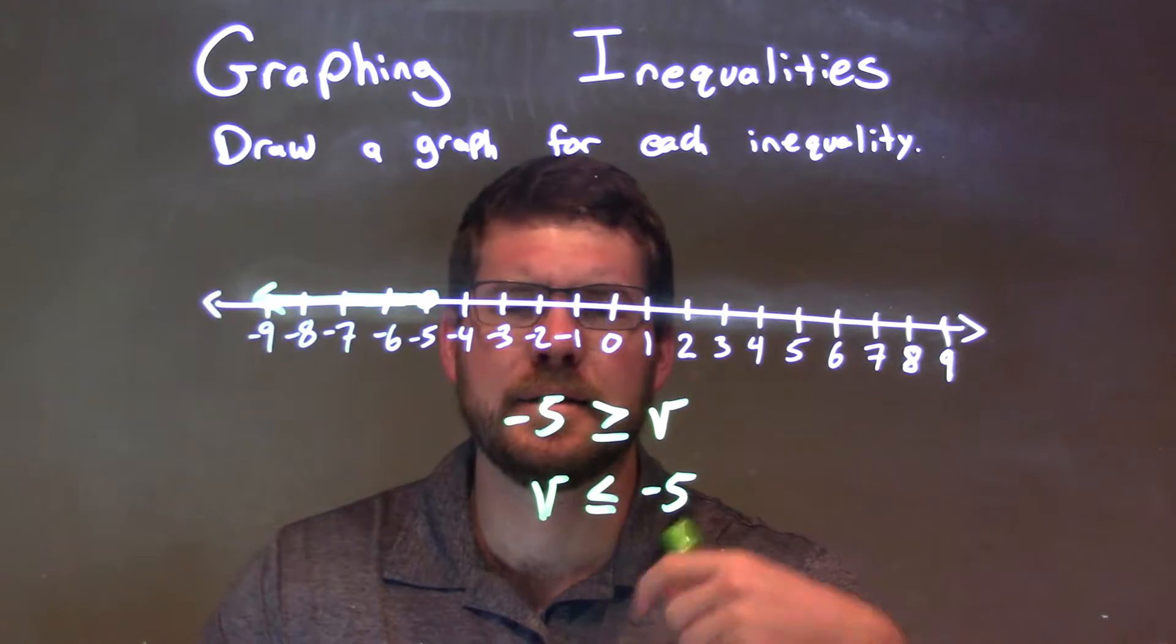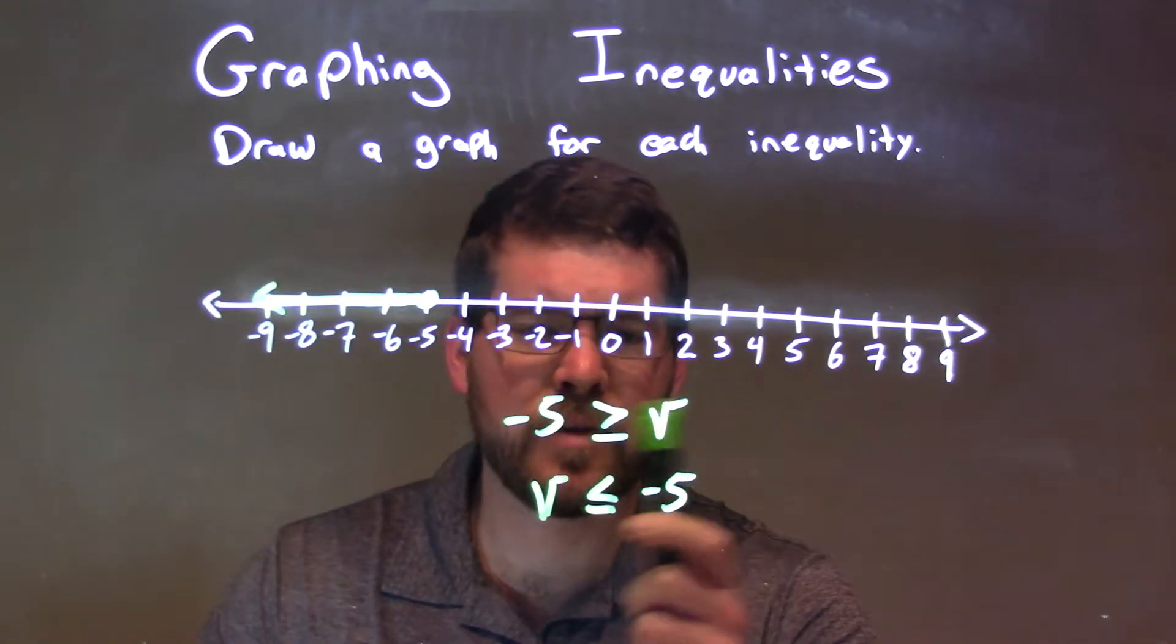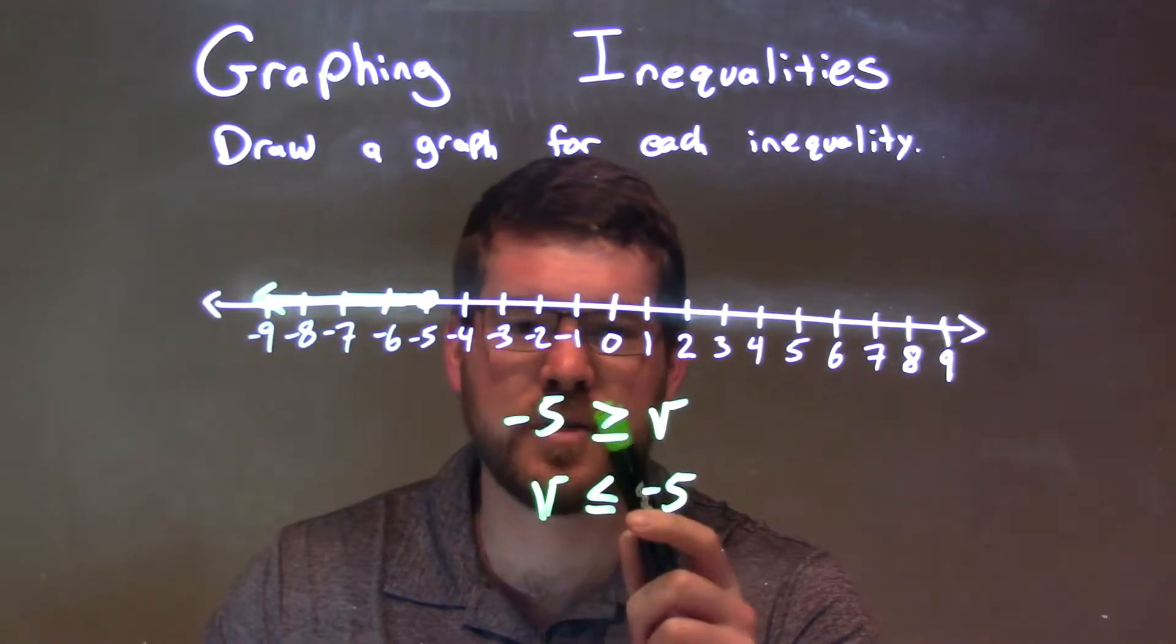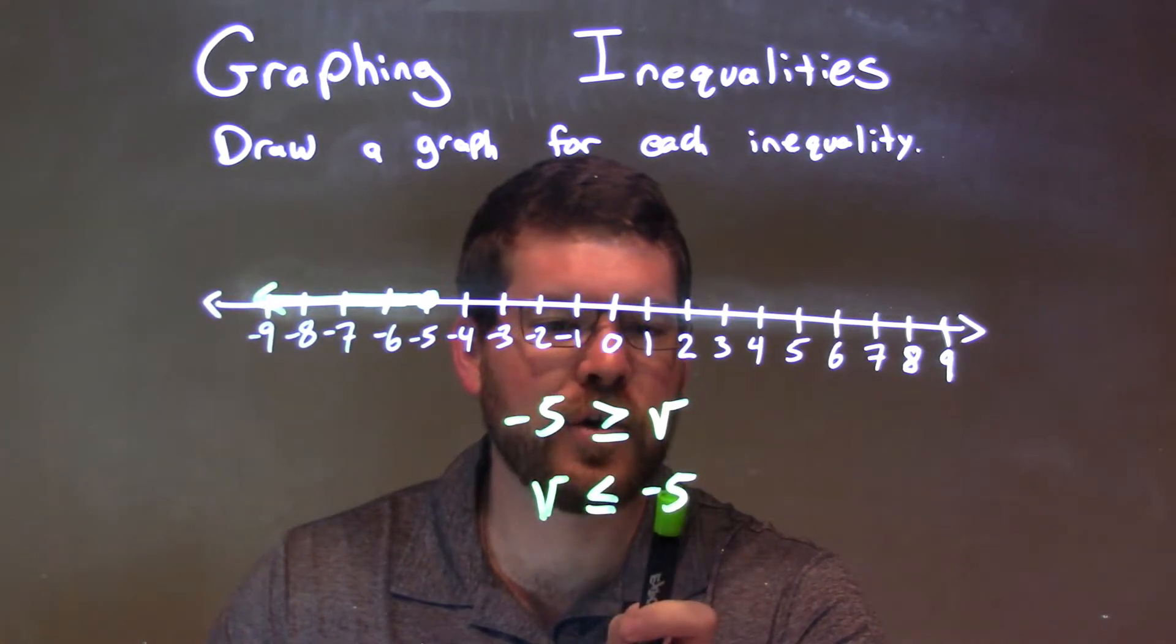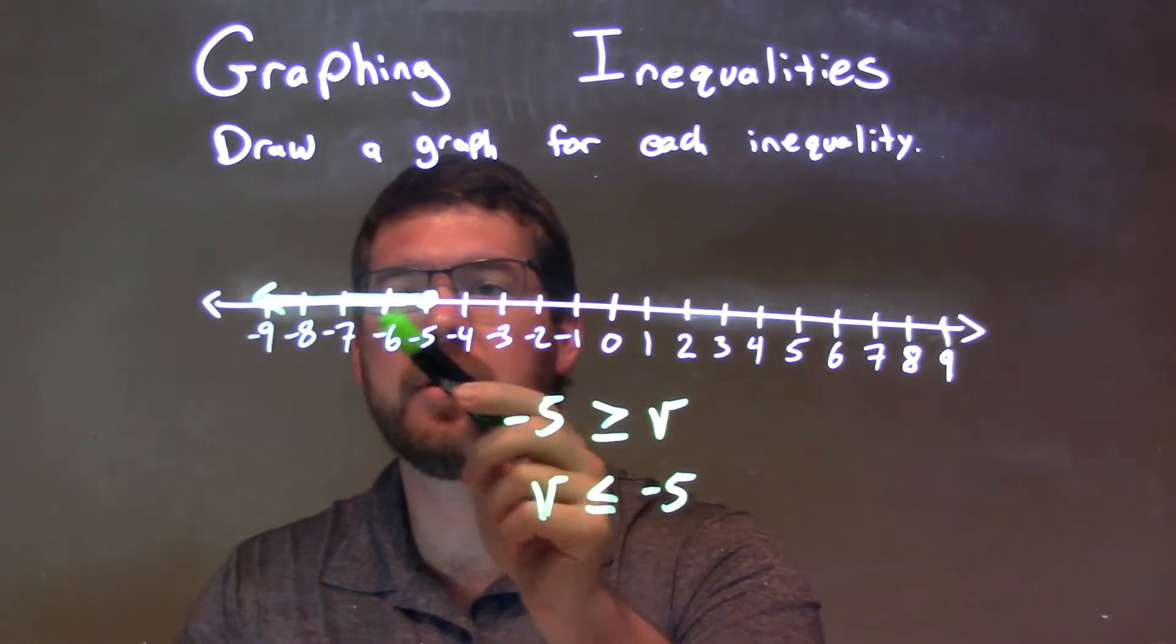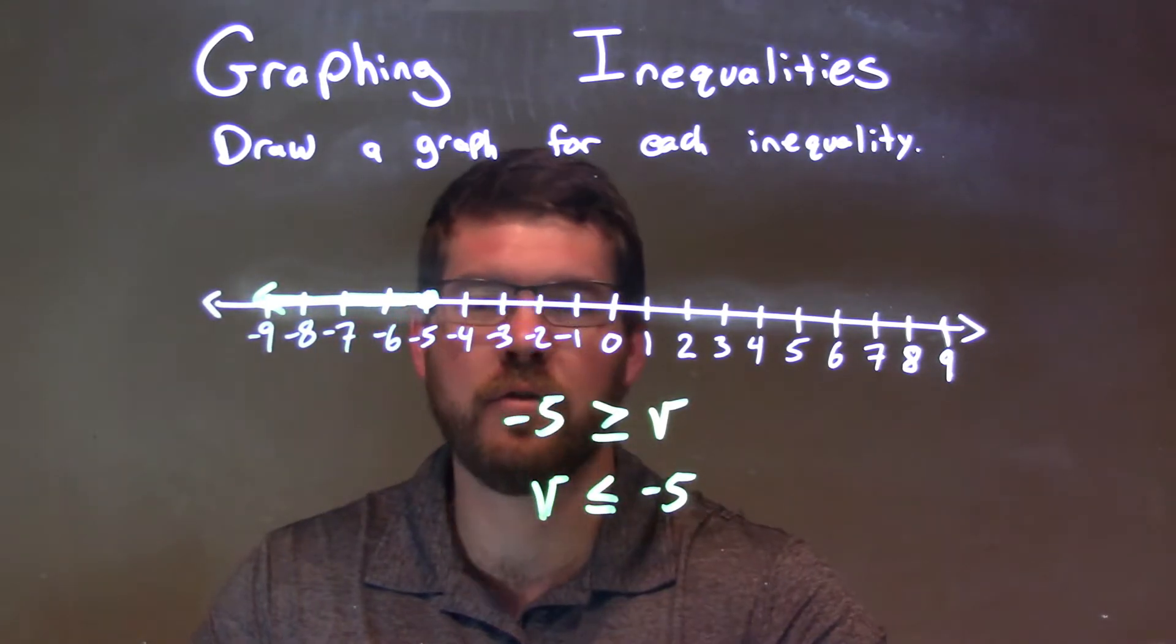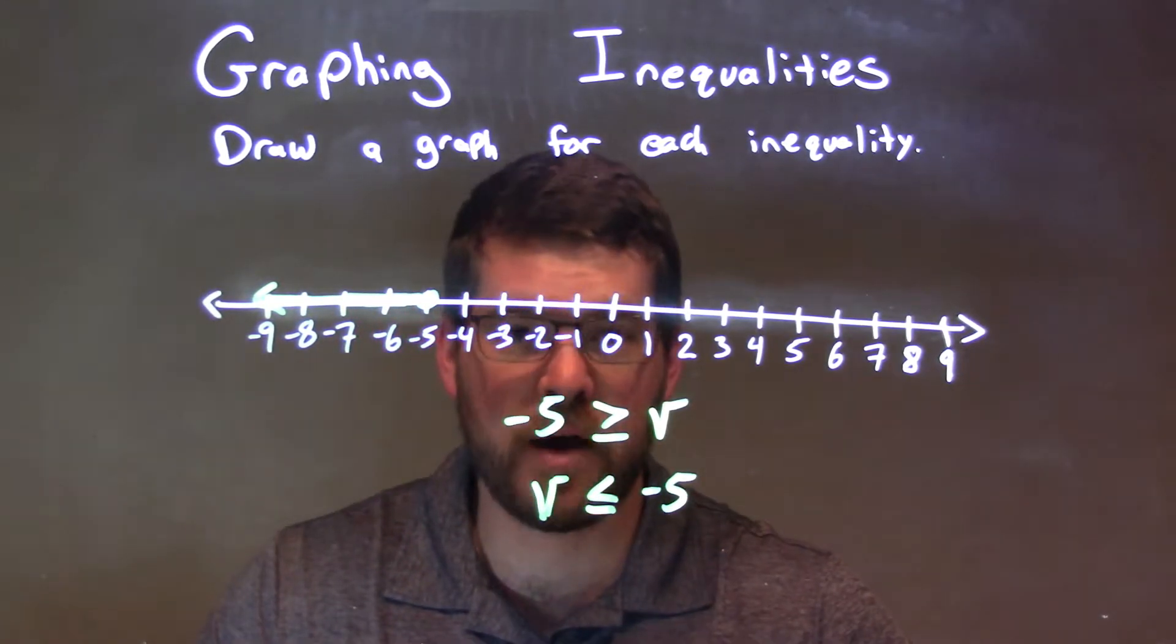A few key things to recognize here: I flipped it to have V come first, changed the greater than or equal to sign to be less than or equal to sign. Then, closed circle at negative 5 gives V equal to negative 5. And we shade to the left, because V is less than negative 5. So now this graph is our final answer.